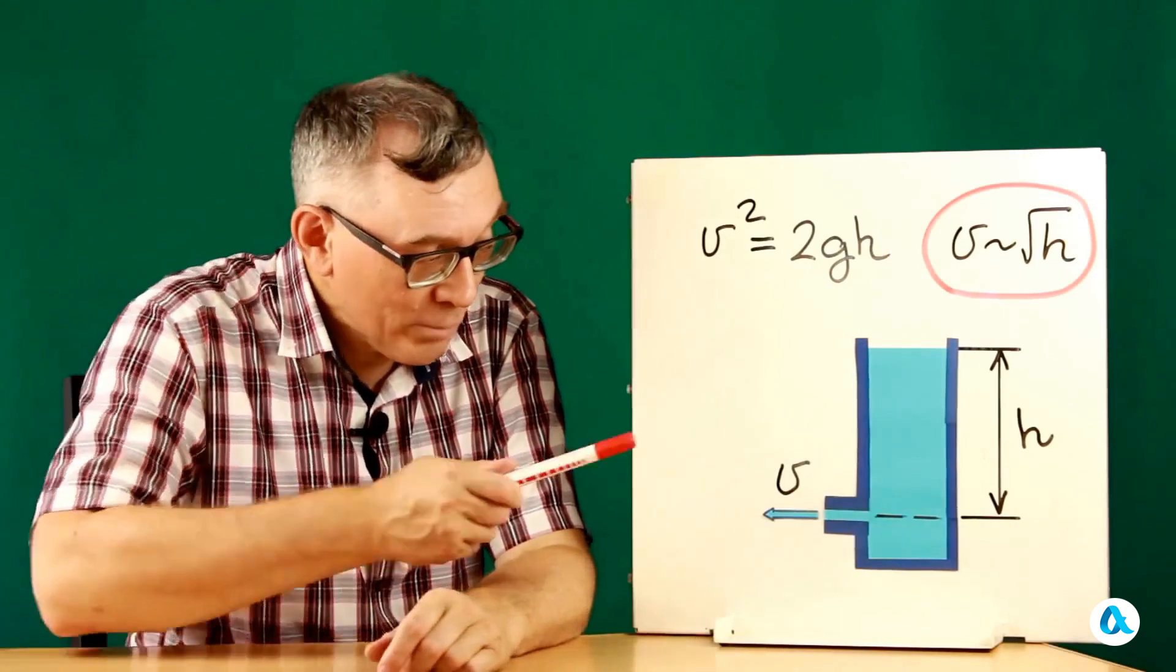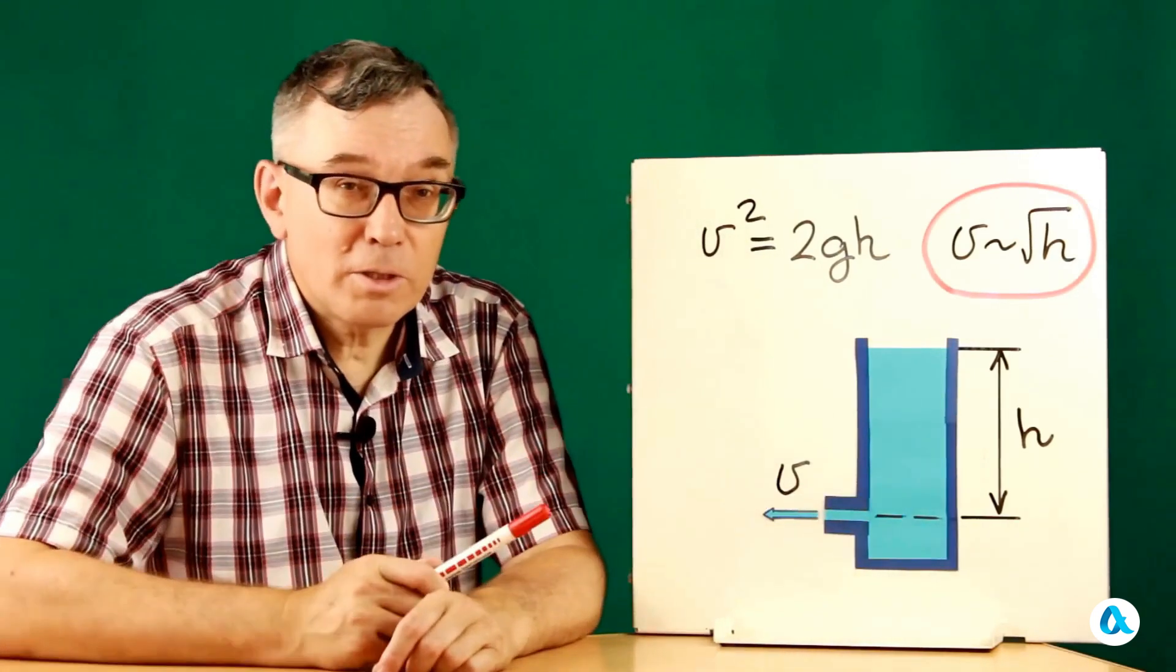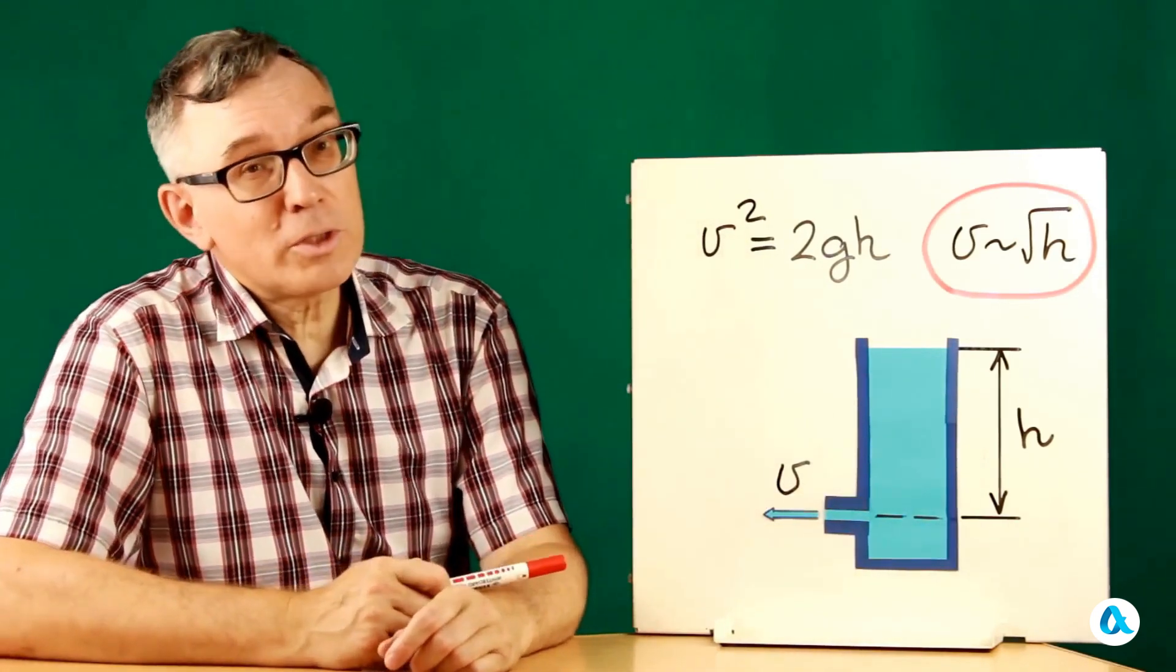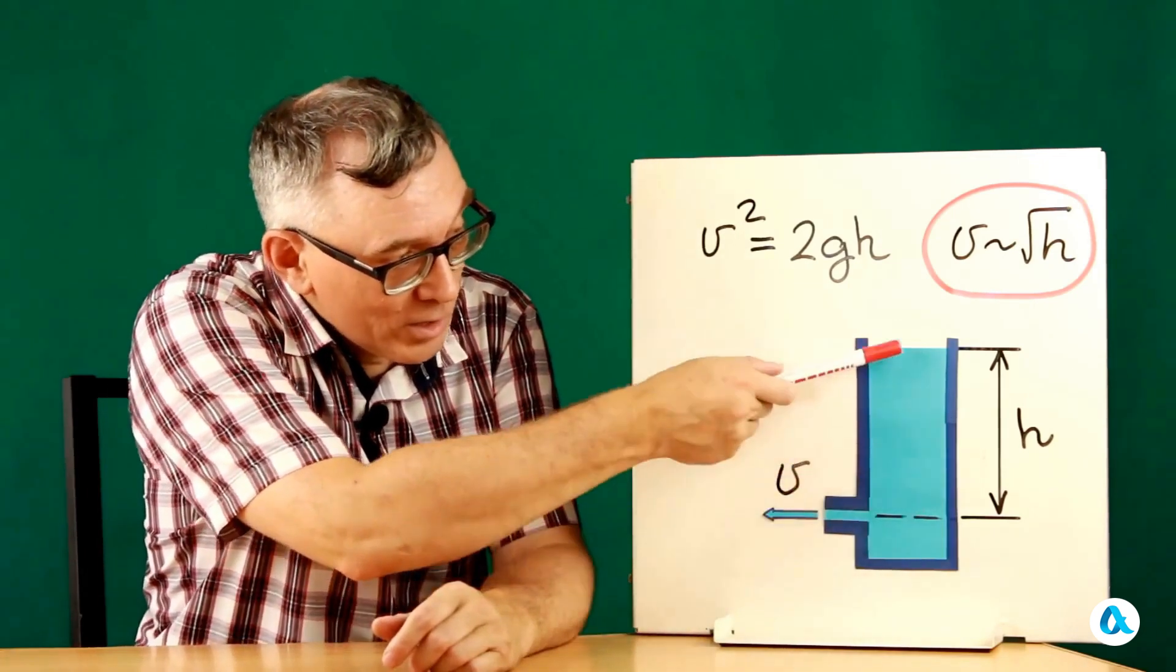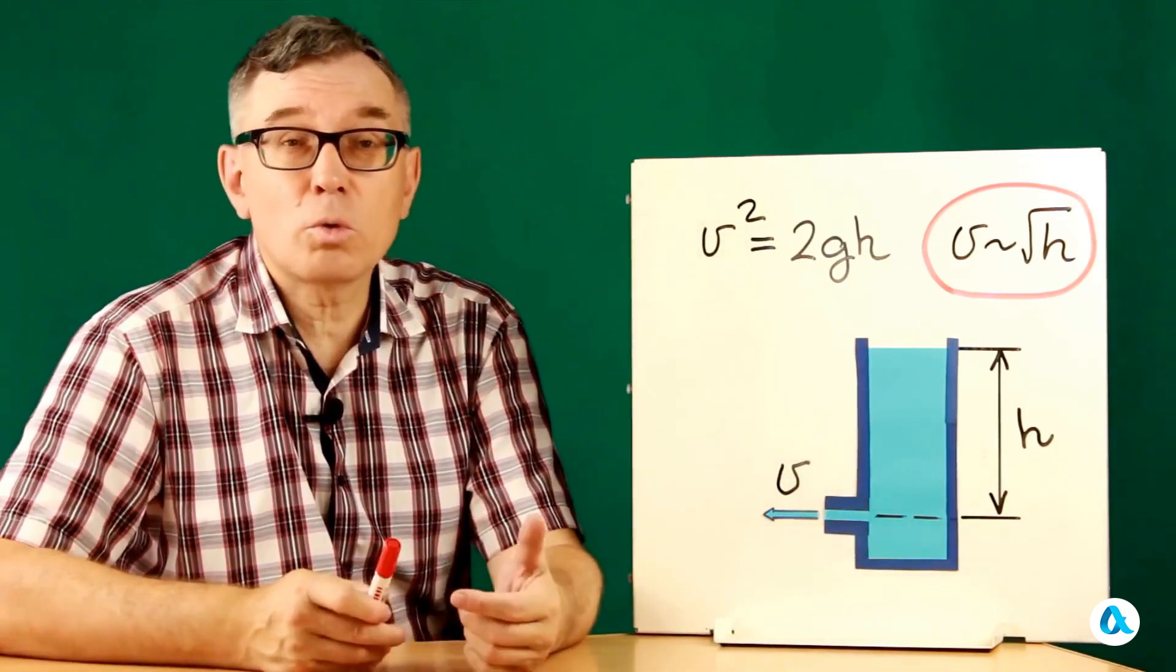The fact is that the pressure opposite the tube is greater than atmospheric pressure by the amount of hydrostatic pressure created by a water column of height h. This pressure is equal to ρgh.